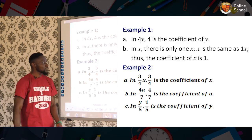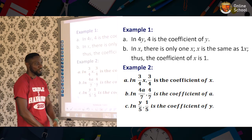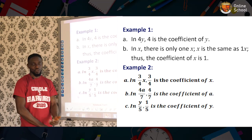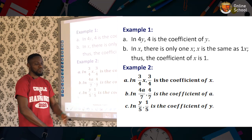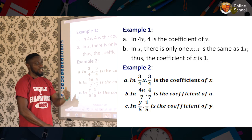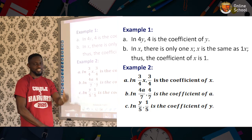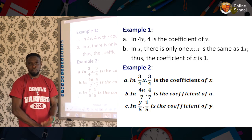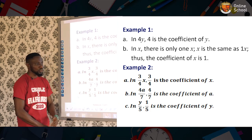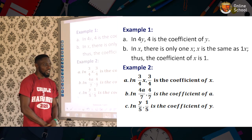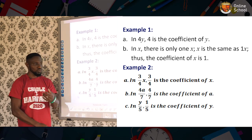Now, let's go into coefficient proper. Let's look at example one. In 4y, 4 is the coefficient of y. The second one says in x, there is only one x. x is the same thing as 1x. In mathematics, we don't write 1x, we write it as x. So you can say that the coefficient of x is one.